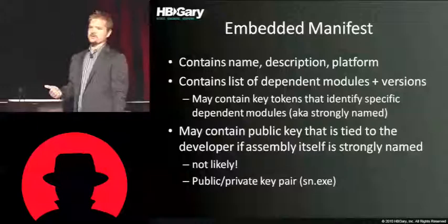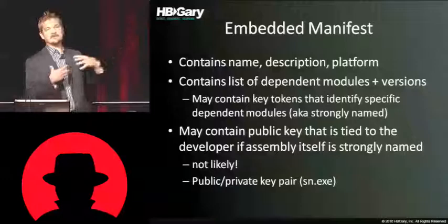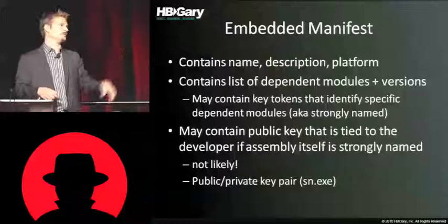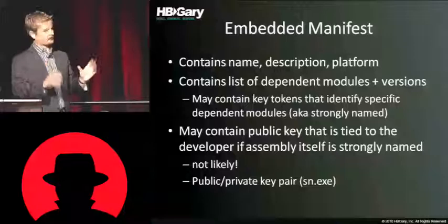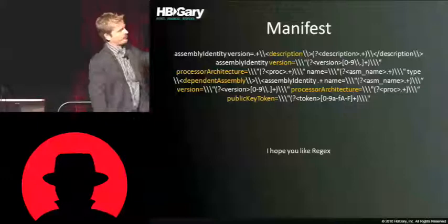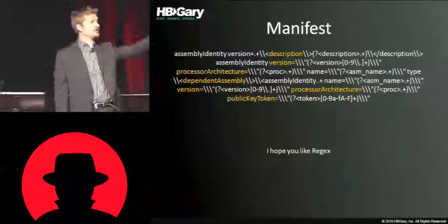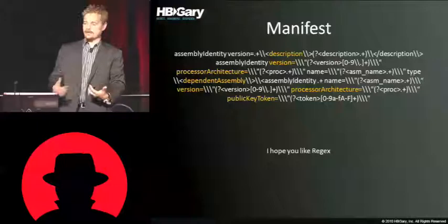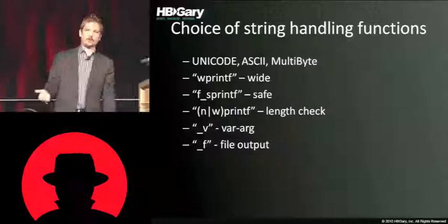Manifests could even have public key information in there — not the private key itself, but the public key information that could be tied to the machine in question. It's not likely a malware developer would be that careless, but it's possible. I wrote a regex that can pull out all the different manifest fields for you. As you can see using the fingerprint utility — I hope you like regex, because we leverage it a lot — we're focusing heavily on string data.